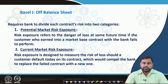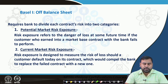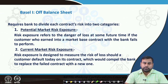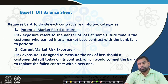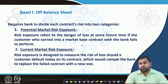Current market risk exposure is designed to measure the risk of loss should a customer default today on its contract, which would compel the bank to replace the failed contract with a new one. There are risks expected in the future and risks the bank is already exposed to. Off-balance sheet items generally have two components of credit risk exposure, and weights should be provided accordingly.